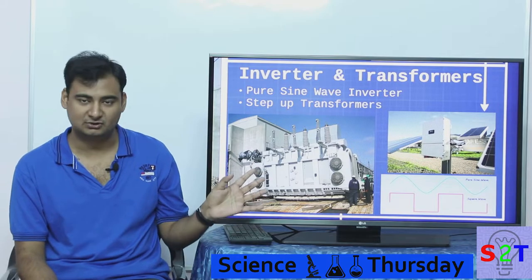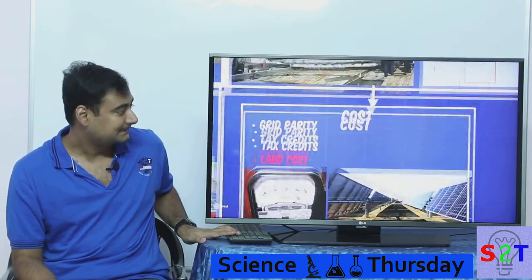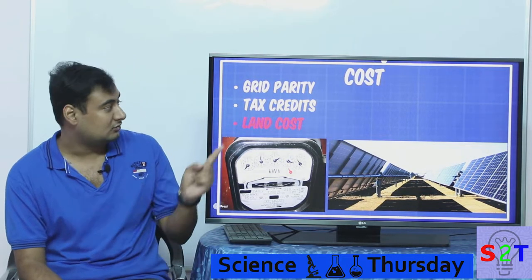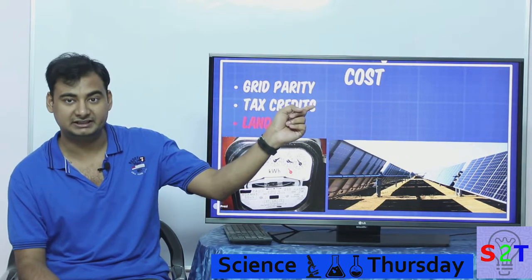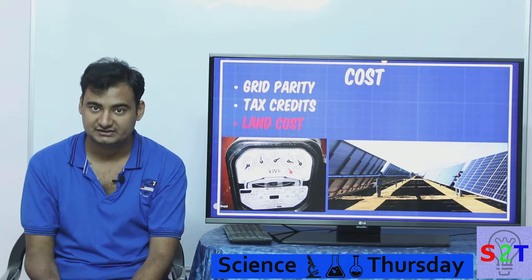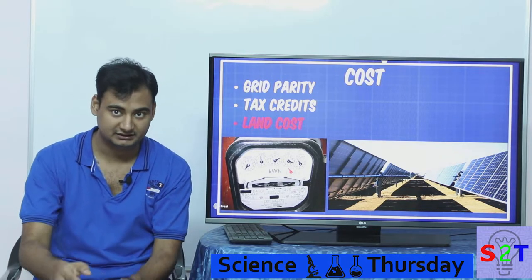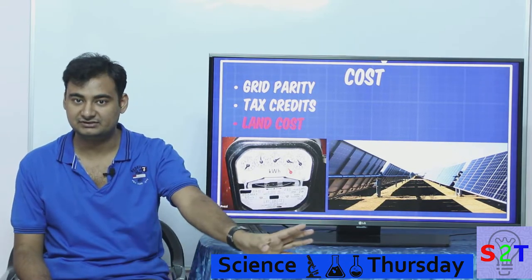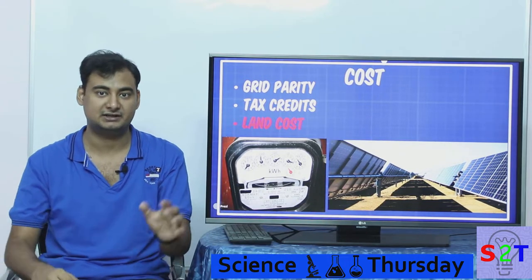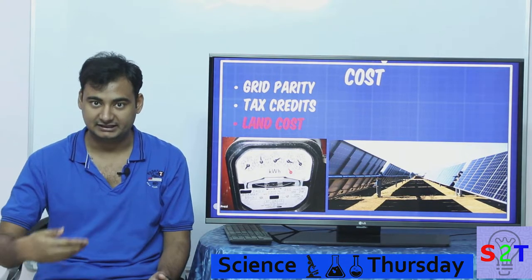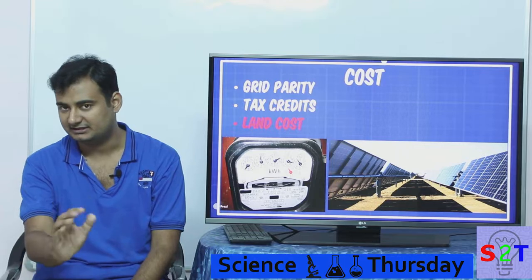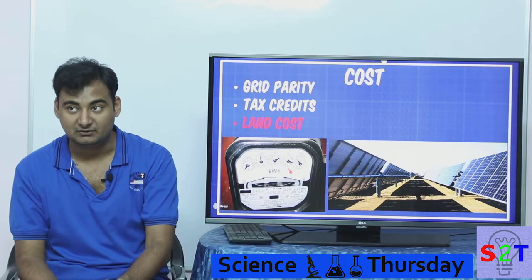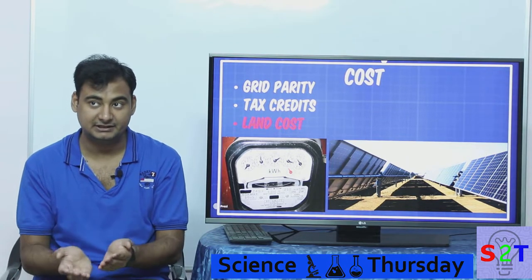Now let's talk about cost, which is solely dependent on what we call grid parity. A coal power plant produces electricity and sells it to the national grid. The grid takes energy from all providers — dams, coal plants — and there's a tariff: roughly one cent per kilowatt-hour at grid level. The question is: can your solar installation provide power at that cost? That's grid parity.